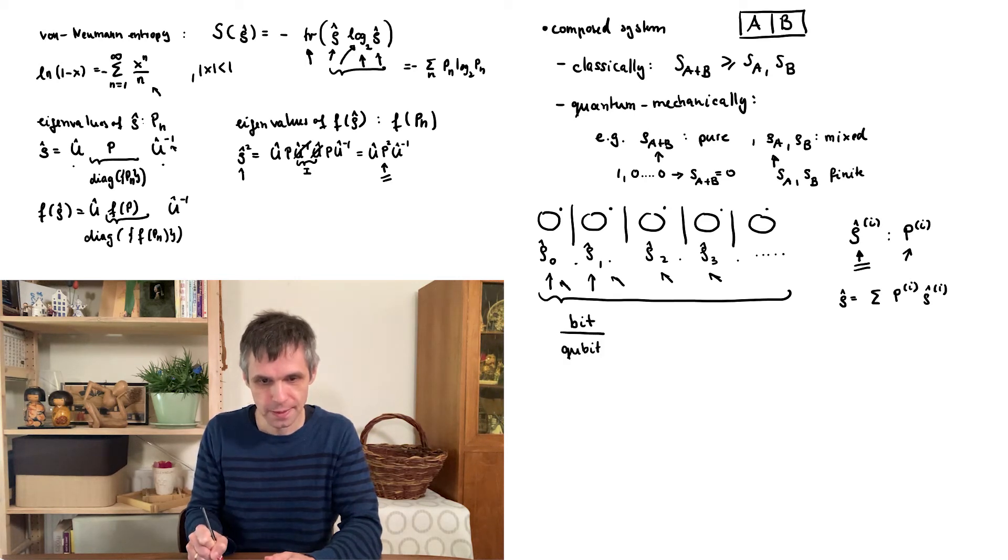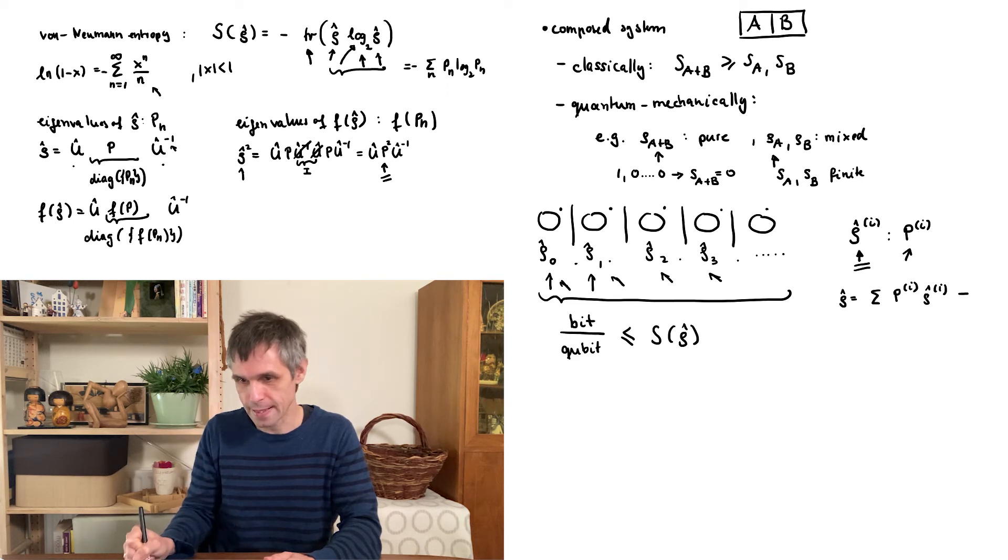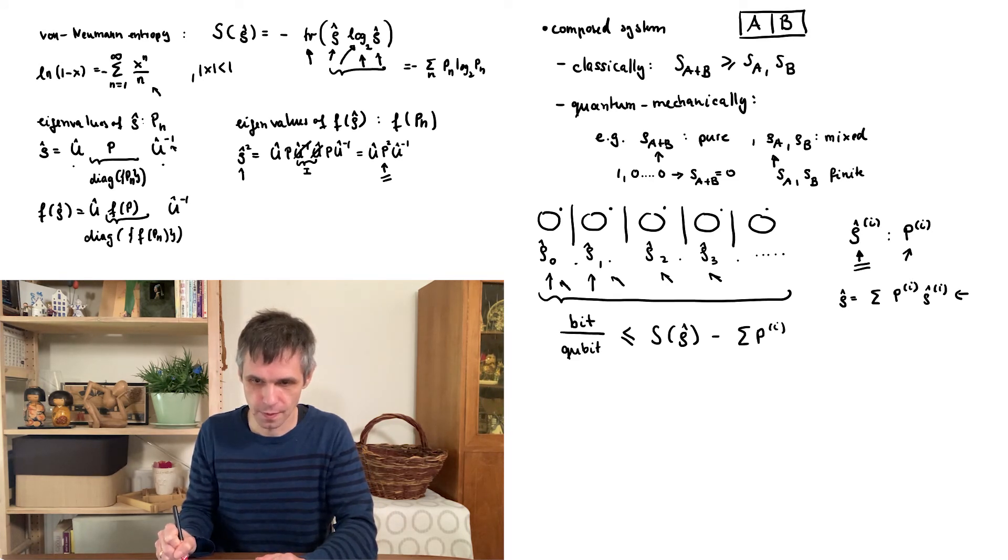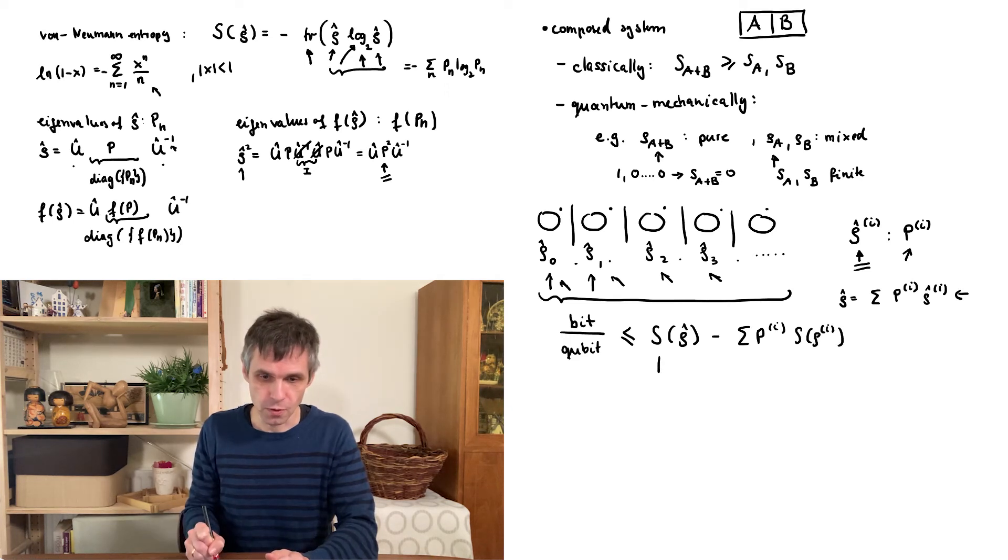And this is the amount of information, so the number of bits that you can encode on average in each of these quantum bits. So this is a bound, and this is bounded by the entropy, the von Neumann entropy corresponding to this density matrix here, further reduced by the following expression.